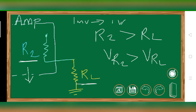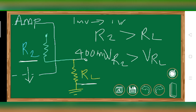This creates an issue: we want 1 volt at the output, but we won't get it. Maybe we'll only get around 400 millivolts of signal at the output, while 0.6 volt is consumed by R2, the output impedance of the amplifier. So we won't get the properly amplified signal we wanted.